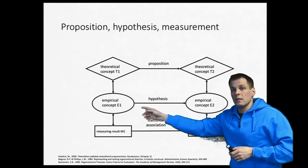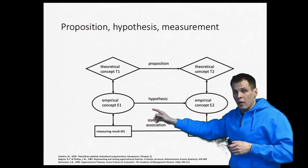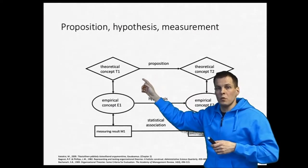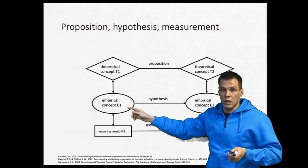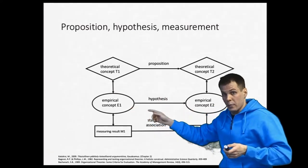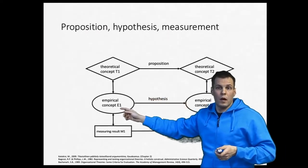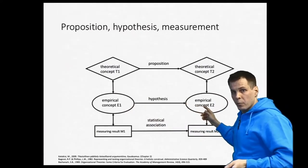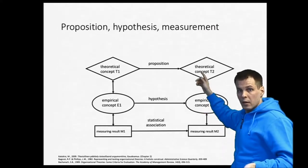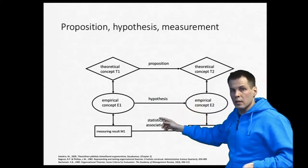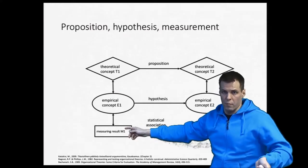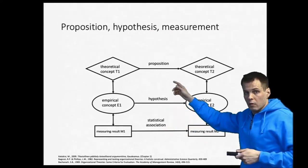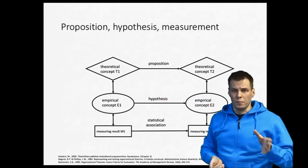Then we have empirical concepts — things we can actually directly measure — and we have a hypothesis. If two theoretical concepts are related, we should also have measures of those concepts that are statistically related. For example, a doctor's assessment of CEO gender — which is directly observable — and return on assets from profitability reports — also directly observable — should be related if there is a relationship between CEO gender and profitability. That is our hypothesis. We collect actual data and test whether there is a statistical association. If there is, we conclude the hypothesis and proposition are supported.